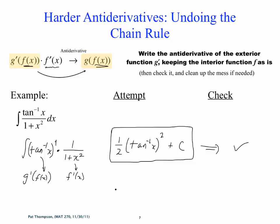Any questions? Does it make sense? Because it's the derivative of arctan — that's your rule for arctan: the derivative is 1 over 1 plus x squared. That tells us that's our F prime part, and this must be the G prime of F part.